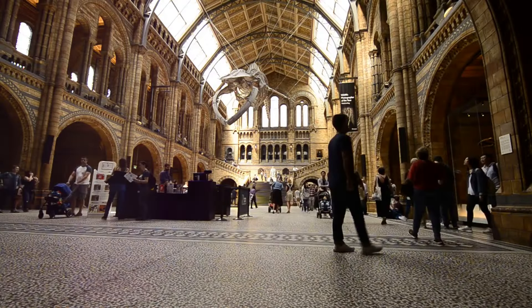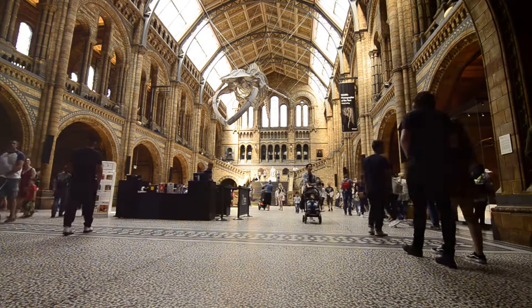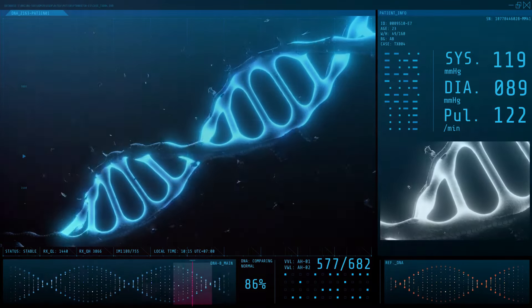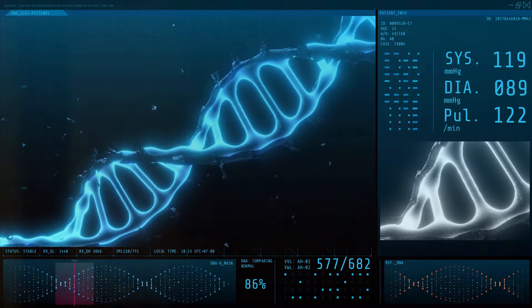Darwin's theories of evolution and natural selection forever changed how we understand the world around us, starting with the theory of evolution. Darwin proposed that life on Earth has been evolving or changing gradually over time, for millions of years.